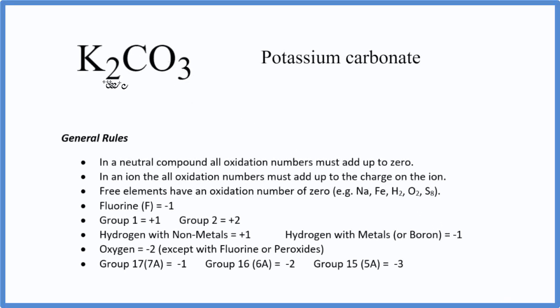To find the oxidation numbers for K2CO3, potassium carbonate, we'll use these rules here. Potassium carbonate is a neutral compound. There's no plus or minus sign out here. And if we have a neutral compound, all the oxidation numbers add up to zero. So that's something that's good to know.